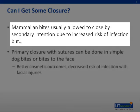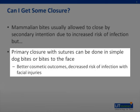Mammalian bites can often appear to be simple lacerations, but primary closure is rarely performed, as studies have shown it increases the risk of infection. Exceptions include simple dog bites with no evidence of infection or deep tissue injury, where the risk is very low. Injuries to the face are also often closed primarily, as cosmetic outcomes are better and the brisk blood supply to the face is thought to decrease infection risk.